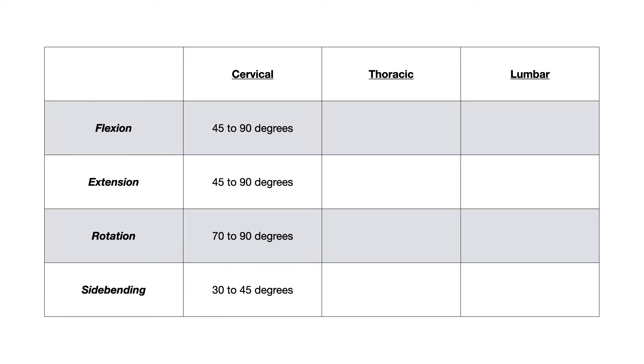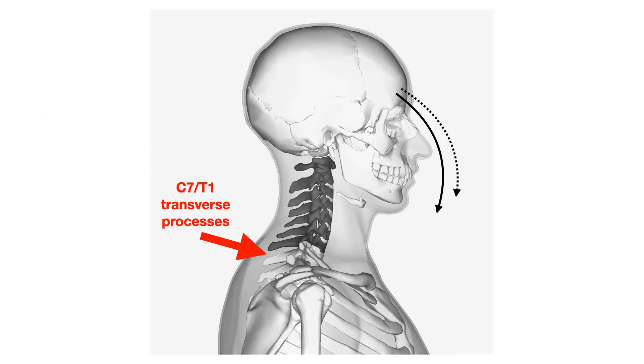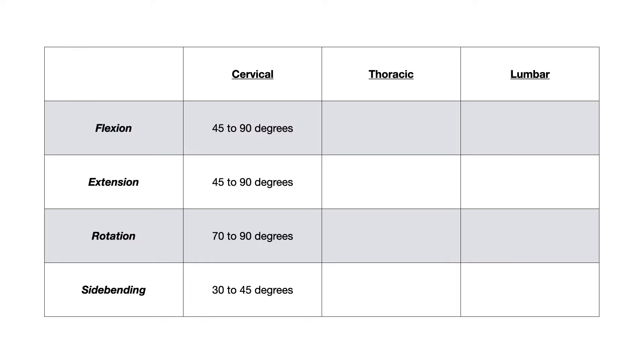For side bending, the cervical spine can do 30 to 45 degrees. And for side bending, you're just going to have the patient bend their neck to the right or the left. And again, there's an active component, there can be a passive component. But you're assessing at the C7T1 transverse processes what's happening in that joint space. And then you're applying that to the rest of the cervical spine.